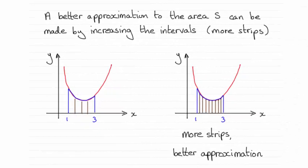For this part of the question, to get a better approximation to the area S, all we need to do is increase the number of strips or intervals. The more strips we have, the closer the trapeziums get towards the curve. So more strips means a better approximation. I've drawn a diagram — you don't have to do that — it's just there to bring this point out a bit more.